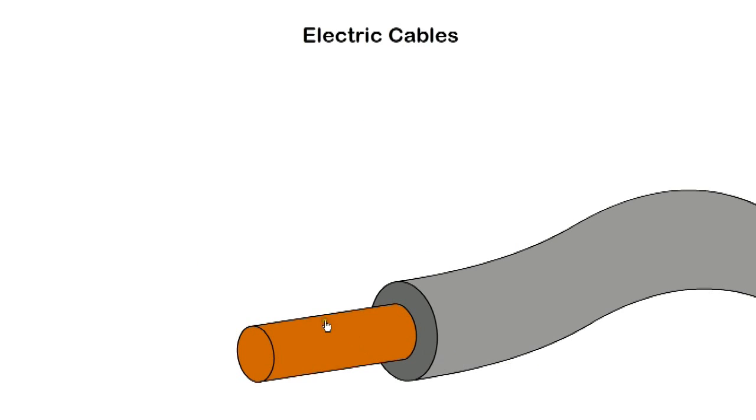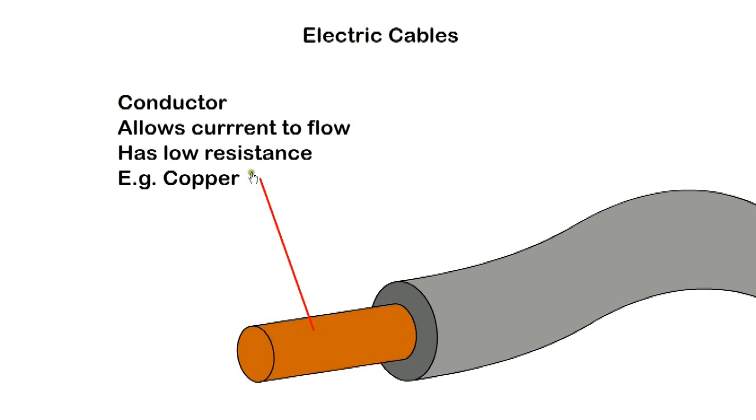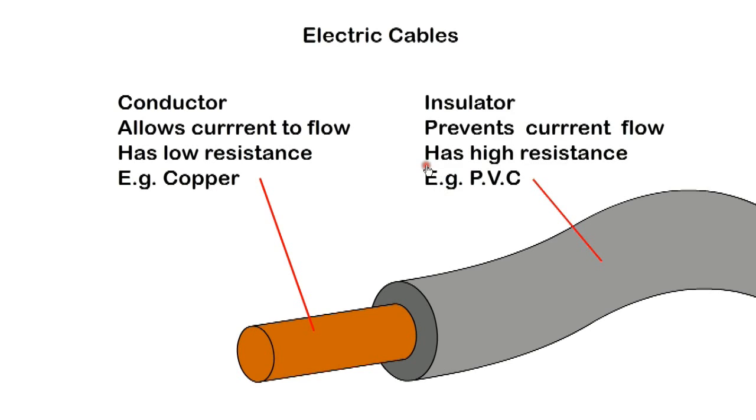The conductor of a cable is used to carry electrical current. It has low resistance and usually is made from copper. The insulation has high resistance and is usually made from plastic or PVC.